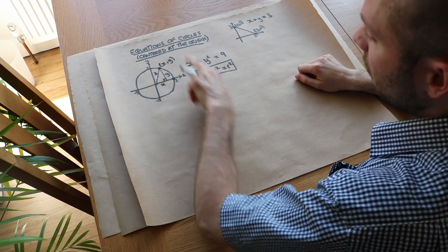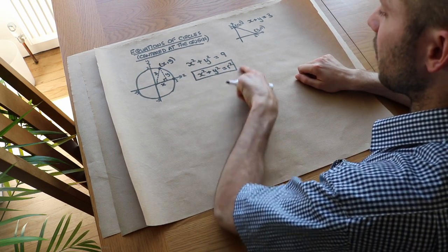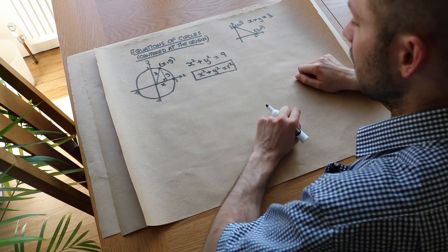So you don't need to remember the Pythagoras bit, you just need to remember this equation. If it's a circle centered at the origin with radius r, it has this equation.